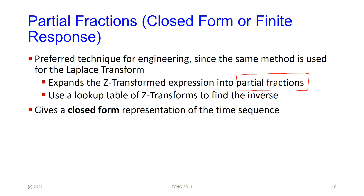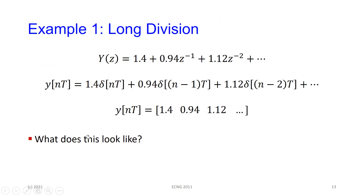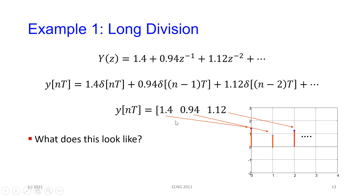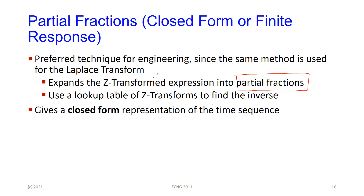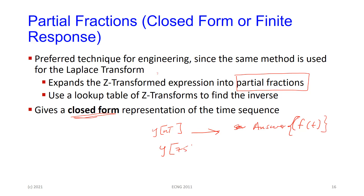You take the transfer function, separate it into partial fractions — smaller components that together make up the transfer function — and then you go to your table and find it. This gives you, as opposed to the long division where you're getting just the first few values, a closed form version of the answer. This version gives me Y(n) in terms of a function where I could substitute any value. If I want to find Y(75), I just substitute 75 in the answer.